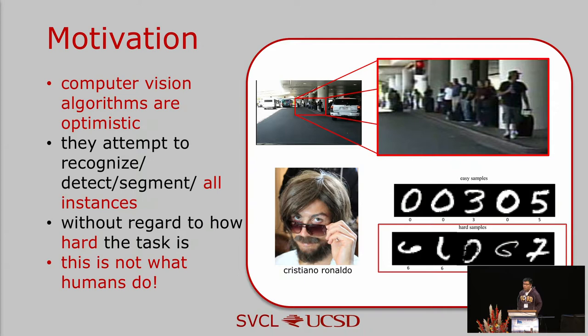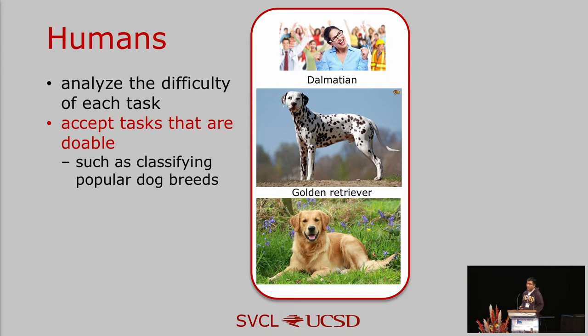But this is not how humans operate. For a human, we have a sense of our limitations. Most humans can do certain things and do them well, but beyond this, they will say 'sorry, I don't know how to do that.' So they first analyze the difficulty of each task, then accept tasks that are doable, work on what they can do, and gradually overcome their limitations.